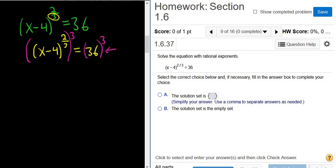I'll show all the work. x minus 4. Properties of exponents say you actually multiply 2 thirds times 3, and that's equal to 36 cubed. These 3's cancel. So we get x minus 4 squared equals 36 cubed.